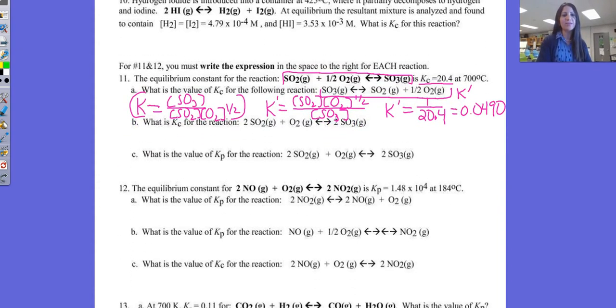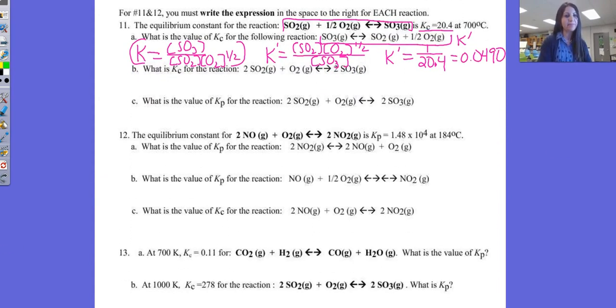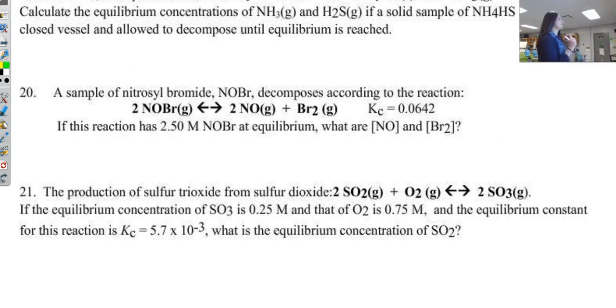And then let's also take a look at number 20. So on this one, they are giving us our equation, they're giving us the value of K, and they're saying the reaction has 2.5 molar NOBR at equilibrium. What are the concentrations of NO and BR2 at equilibrium? So these are what we are solving for. So again, what you want to do first is you want to write your expression out. You want to fill in what you know. And in this situation, I already know K, and I know my NOBR concentration. So I'm simply looking for NO and BR2.